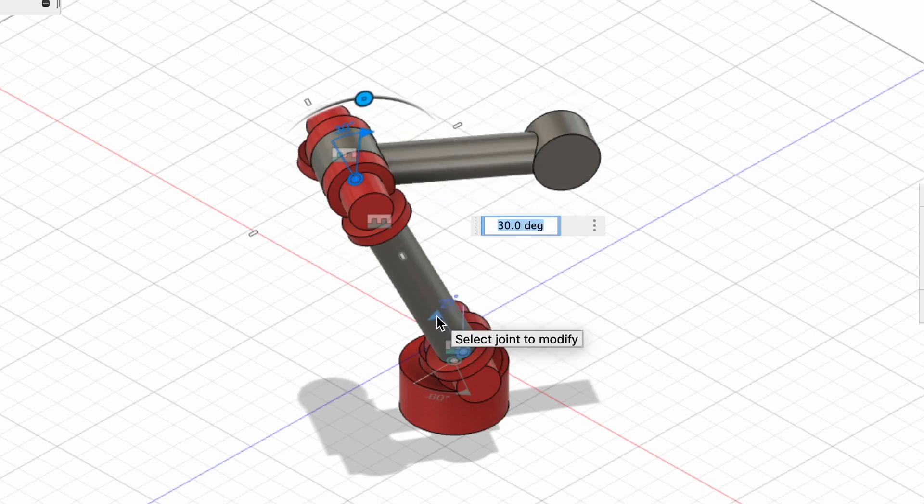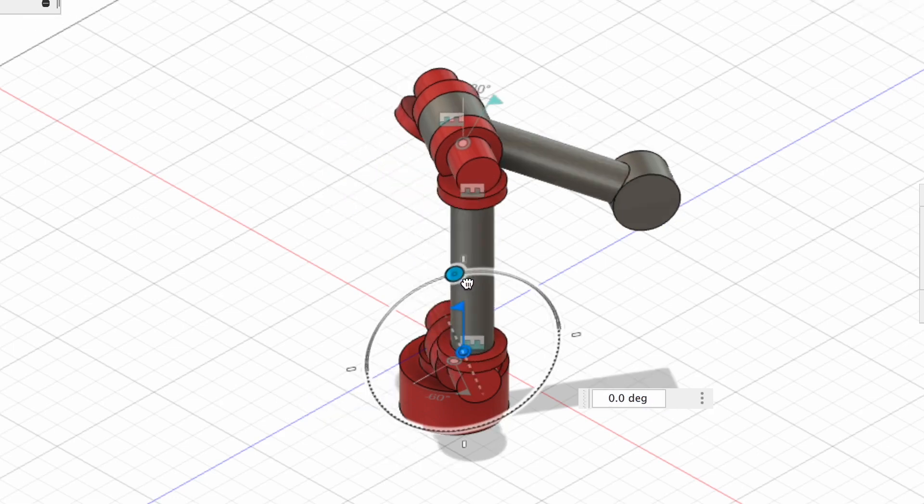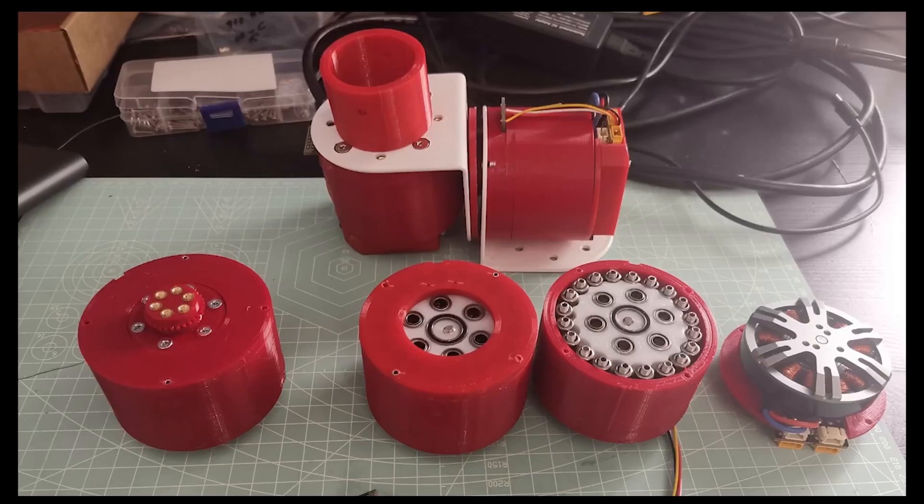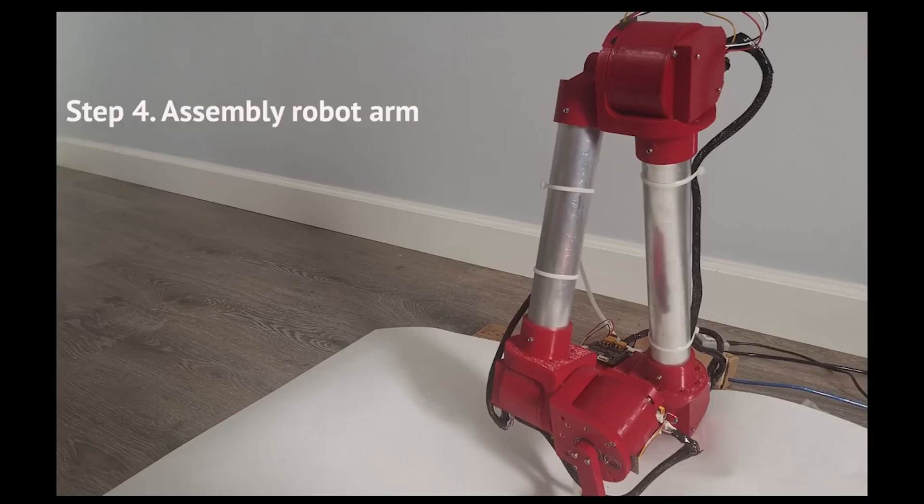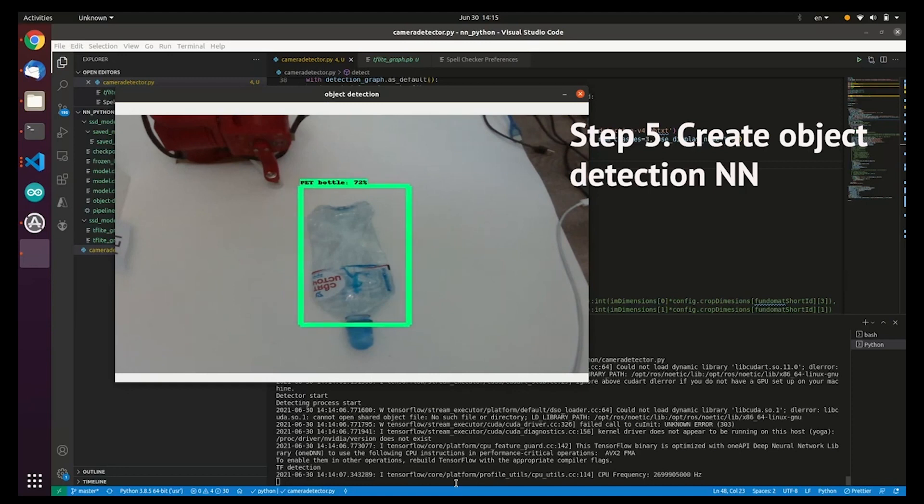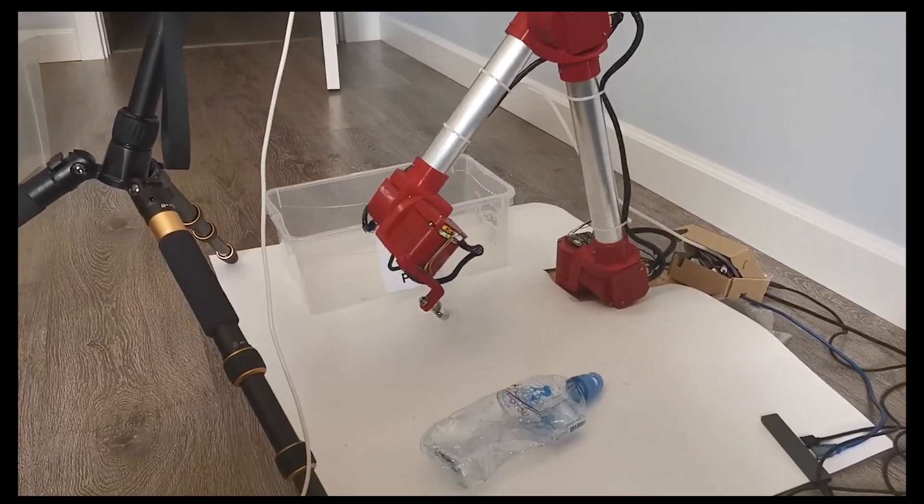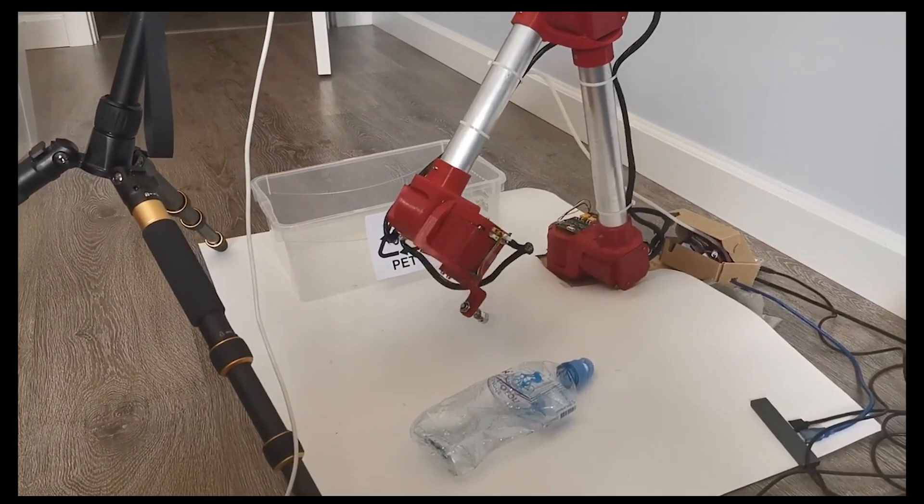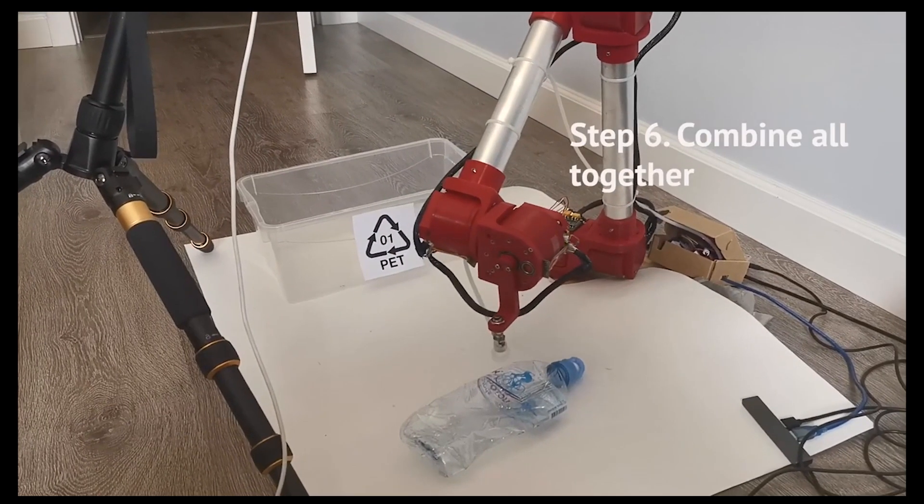Then we will increase the number of axes to 5 or 6. You have to understand that from time to time I tried to implement a robotic arm during the last year. Therefore, this project will not be implemented from scratch. It is based on my experience and the experience of colleagues from other YouTube channels.